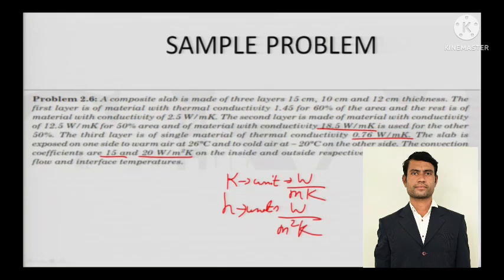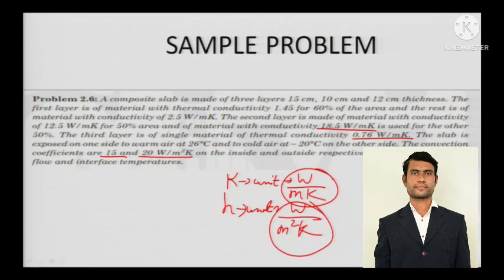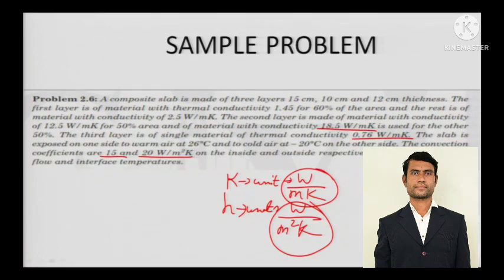You should not get confused by the names given in a numerical problem — look at the units to identify what kind of value is given and to which nomenclature it belongs. The convection coefficients are 15 and 20 watts per meter squared Kelvin, representing h_i for the inside and h_o for the outside respectively.